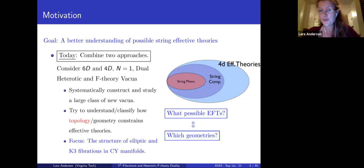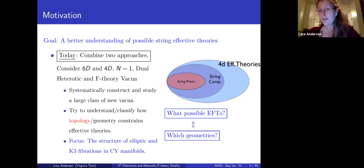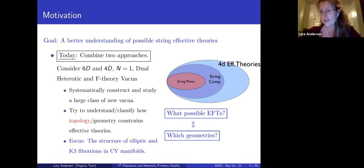In today's talk I'm going to be combining information from two different types of string dimensional reductions: heterotic string theory in 10 dimensions, and F-theory, which is the strongly coupled limit of type IIB formulated in some sense as a 12-dimensional theory. The goal is to systematically construct and study a large new class of string vacua, and to use string dualities to classify how the topology and geometric constraints talk to the effective theory. The focus will be on the structure of elliptic and K3 fibrations in Calabi-Yau manifolds.